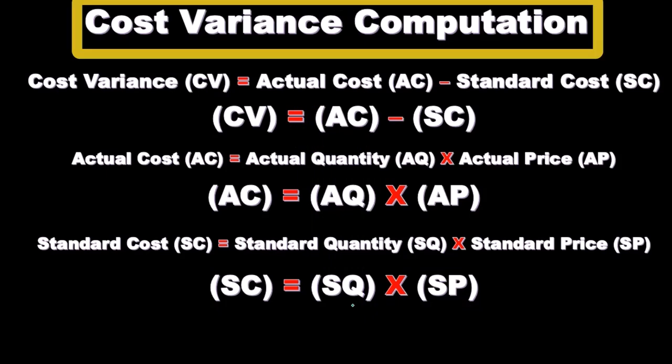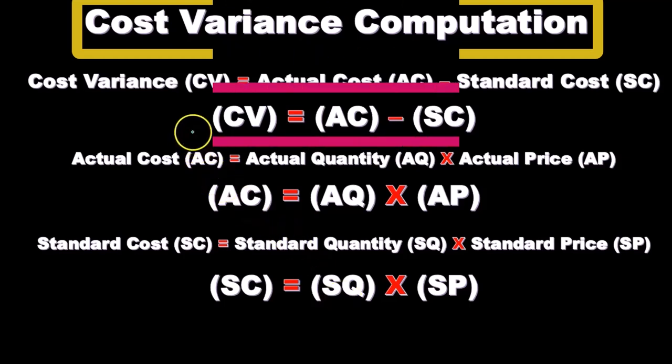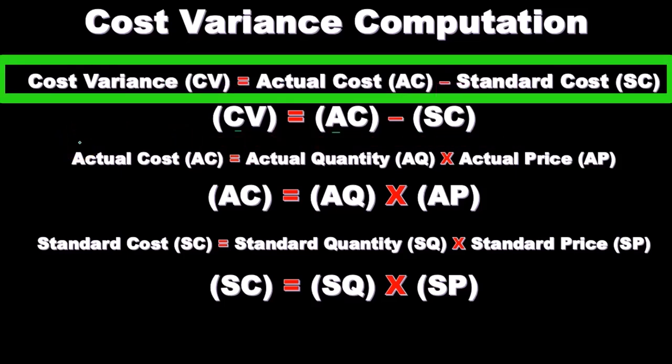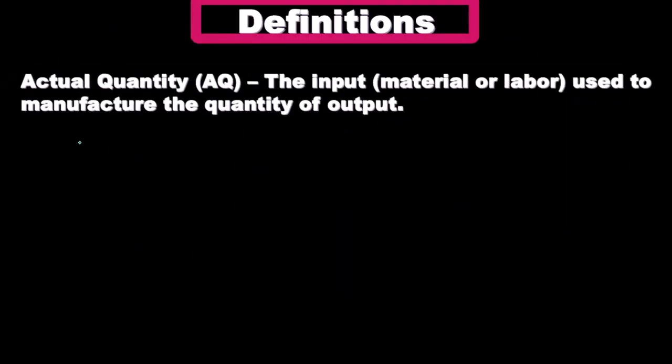Let's take a look at a couple of definitions as we go through this. Hopefully these formulas seem self-explanatory when you look at them. Spend some time with the formulas, but you'll get a better idea of them as we go through problems. Keep this with you so you get down the lettering and can recognize CV as cost variance, AC as actual cost, and so on.